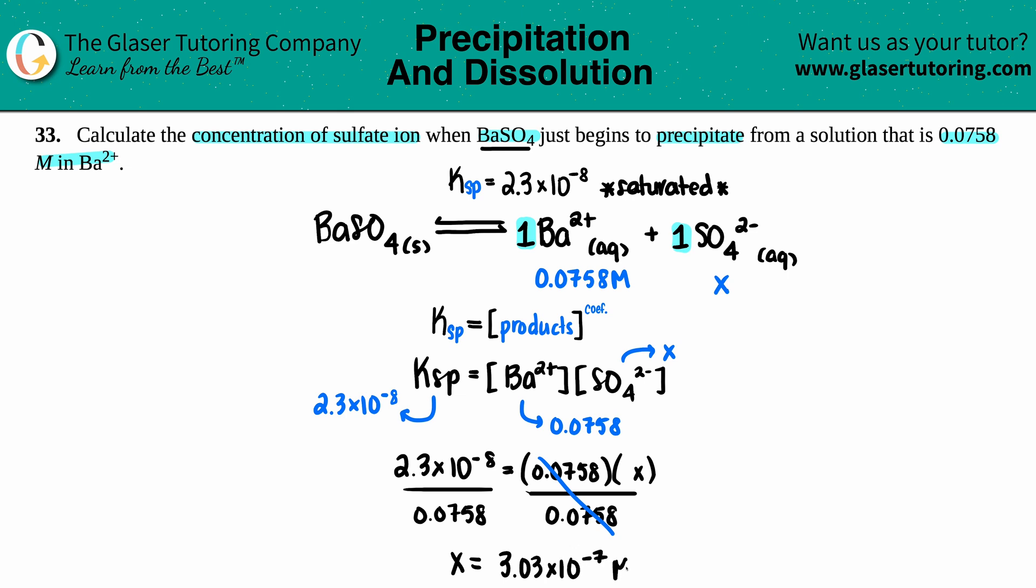Just go back to what your balanced equation was. We wanted to find the concentration of the sulfate ion, and the sulfate ion was just x. So the SO4 2- concentration is 3.03 times 10 to the negative 7th molarity, and we're good to go.